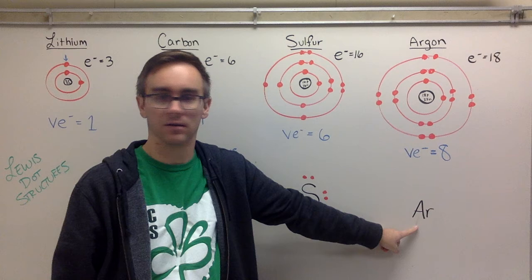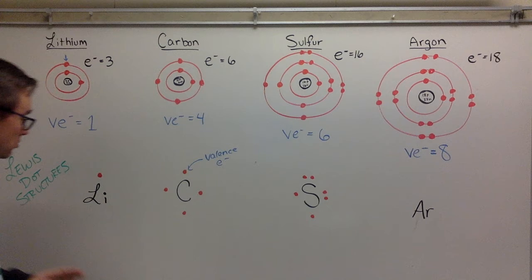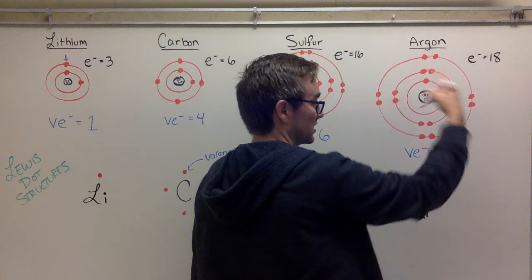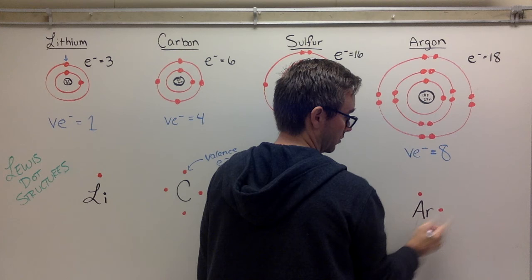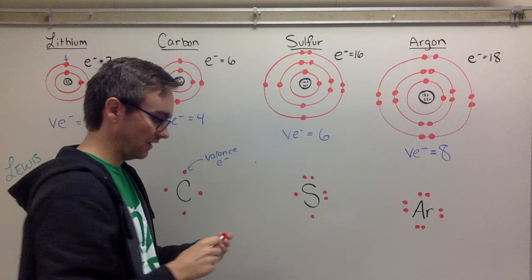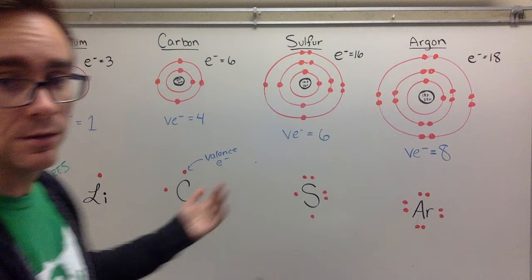The Lewis dot structure's purpose is to show you how many valence electrons there are - only the outer level. Which means I have 18 electrons but only eight of them are valence electrons: one, two, three, four, five, six, seven, eight. Eight valence electrons for that argon. That's it. That's how you make Lewis dot structures.